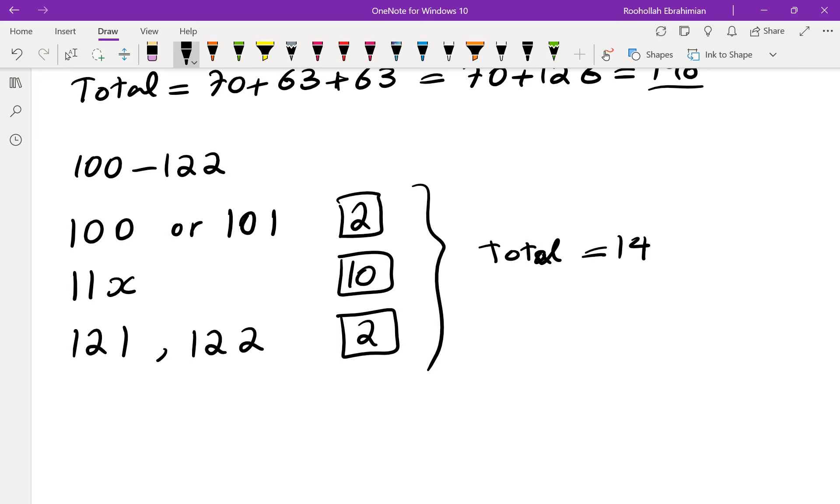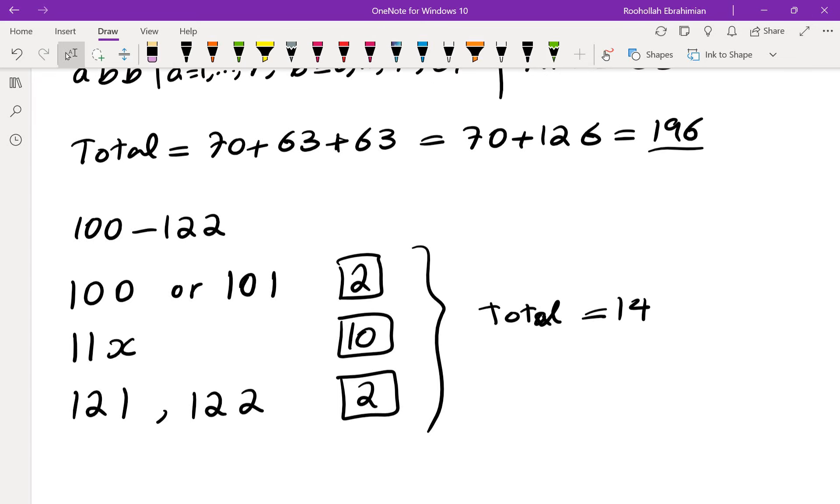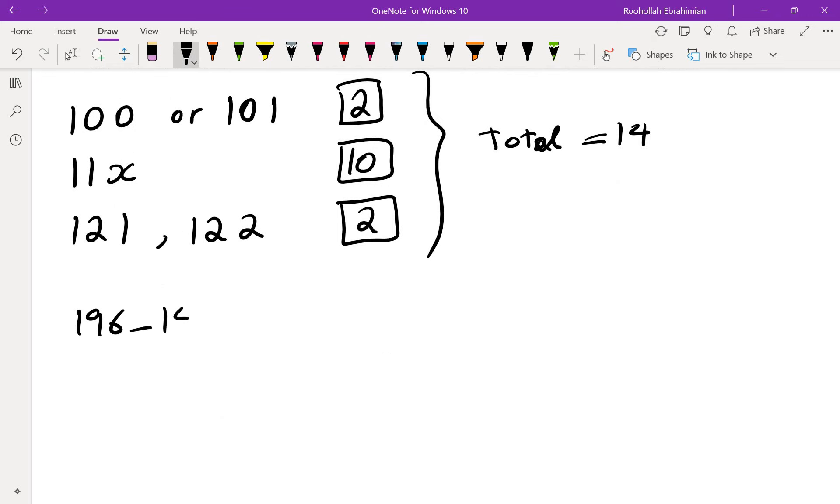So that means 196 minus 14, that gives us 182 so far.